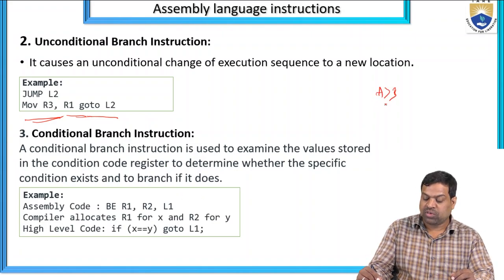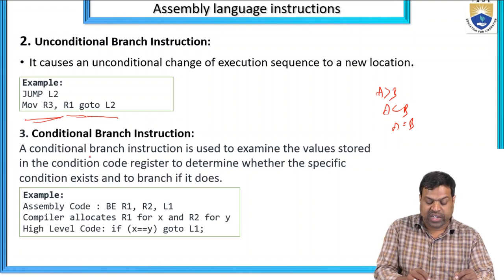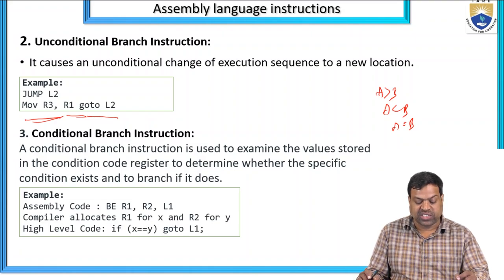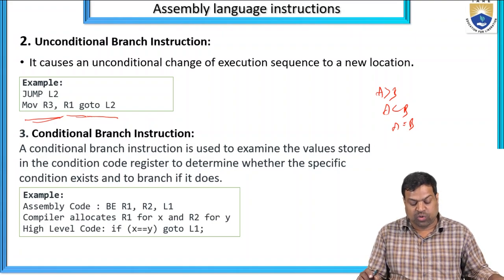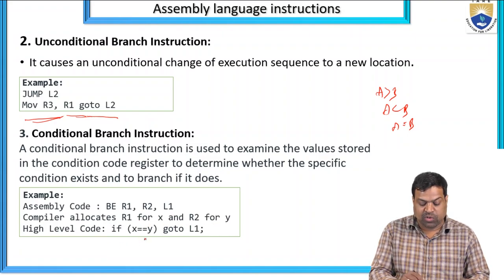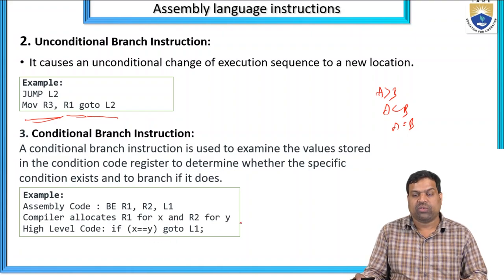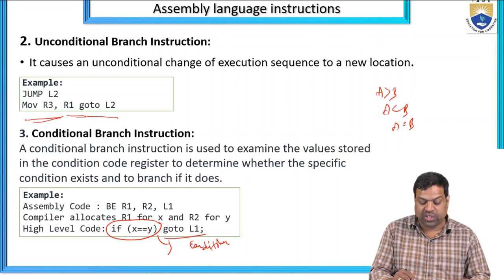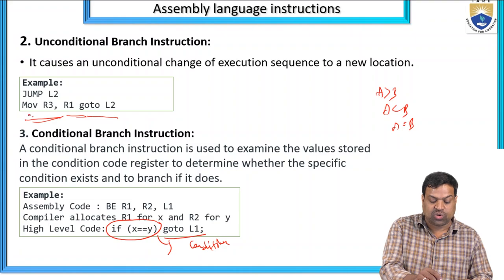Conditional branch means we have to give some condition — when A greater than B, when A less than B, when A equal to B. A conditional branch instruction examines the value stored in the condition code register to determine whether a specific condition exists and to branch if it does. Assembly code: R1, R2, L1 — compiler allocates R1 for X and R2 for Y; high-level code: if X == Y then go to L1.